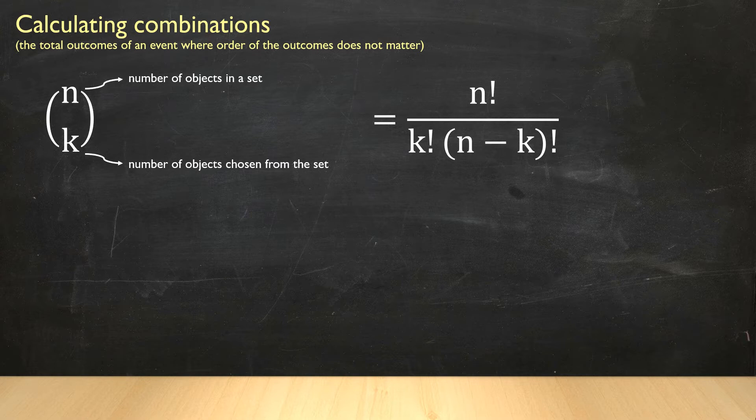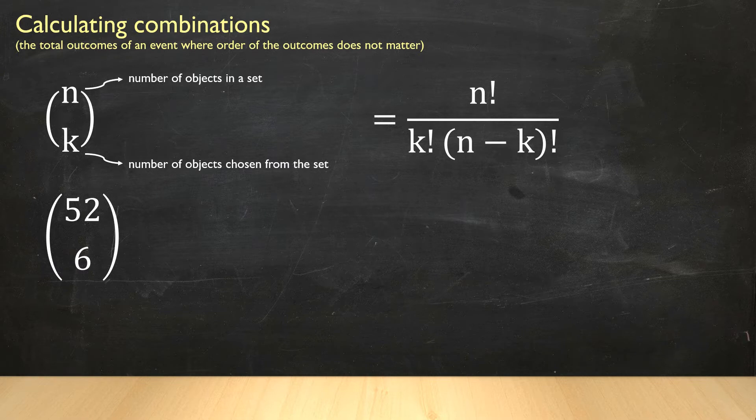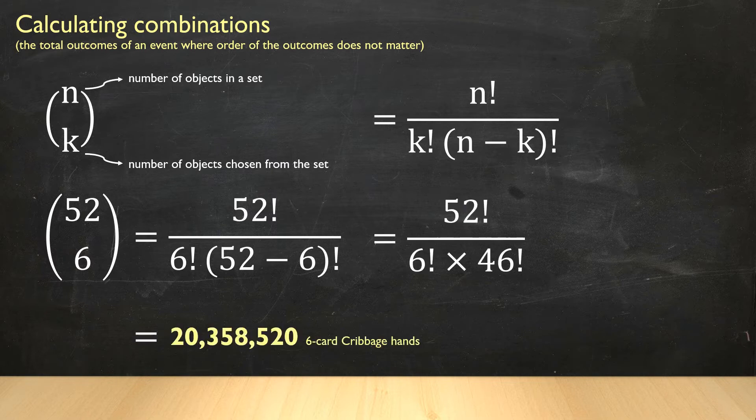So in this case, our N value, the number of objects in our set, is 52, because there are 52 cards in a deck of cards. Our K value is six, the number of cards we're choosing out of those 52. So when we punch that into our calculator, it looks something like this. And our calculator gives us 20,358,520, the total number of possible six card hands.